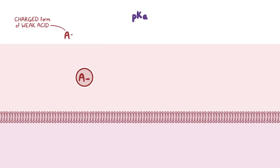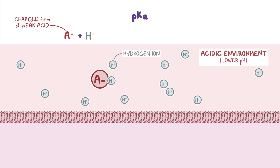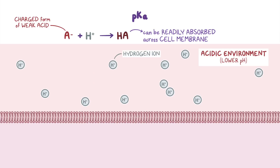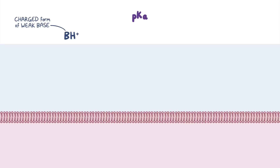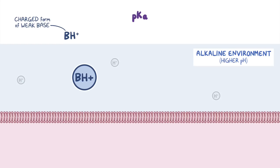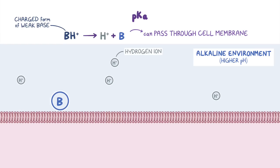When the charged form of a weak acid, A-, shows up in an acidic environment with a lower pH and plenty of hydrogen H+ ions around, it will grab one of them and turn into its uncharged form, HA. HA can then be readily absorbed across the cell membrane. On the flip side, if the charged form of a weak base, BH+, is placed into an alkaline environment with a higher pH and a lack of hydrogen H+ ions, it's going to give up its own hydrogen H+ ion and become an uncharged B, which can then pass through the cell membrane just like HA.